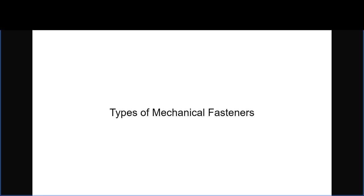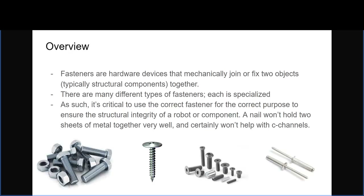I'll start off with talking about the overall types of mechanical fasteners. Fasteners are hardware devices that mechanically join or fix objects together — they're typically used in structural components and are specialized for whatever use. The correct fastener serves the correct purpose and ensures the structural integrity of whatever component or robot you're building is as strong as it can be. For example, you wouldn't use a nail for sheet metal because it can slide apart and won't help when building a frame.